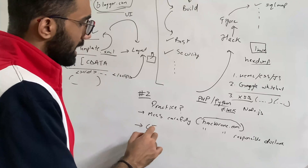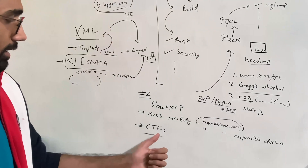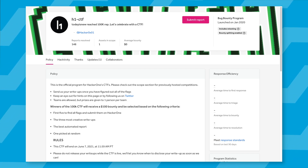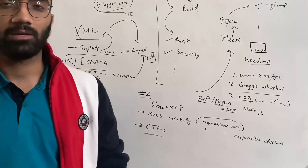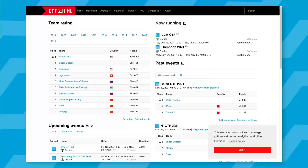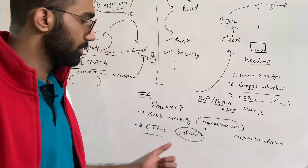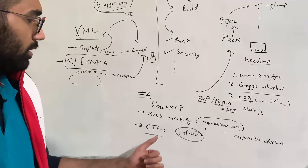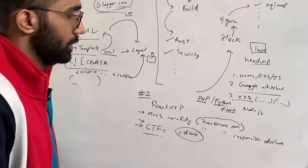Another way to learn is by attempting CTFs — Capture the Flag competitions. These are organized events where systems are deliberately made vulnerable and a particular string or file is hidden for the attacker to find. You can find a lot of CTFs on CTFtime.org; many organizations and universities run them regularly. When I was in university, I was part of a club called Bits Creek where we participated in CTFs as a team, though you can also do them individually. It's a really fun activity.